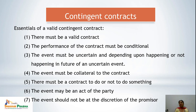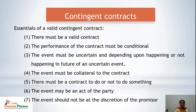The essentials of a valid contingent contract are: first, there must be a valid contract with all essentials under Section 10. Second, the performance of the contract must be conditional — a particular condition must be fulfilled for the contract to be performed. Third, the event must be uncertain, depending upon the happening or non-happening of a future uncertain event. Fourth, the event must be collateral to the contract. Fifth, there must be a contract to do or not to do something. Sixth, the event may be an act of the party, but should not be at the discretion of the promisor. If all these conditions are fulfilled, it is a valid contingent contract.